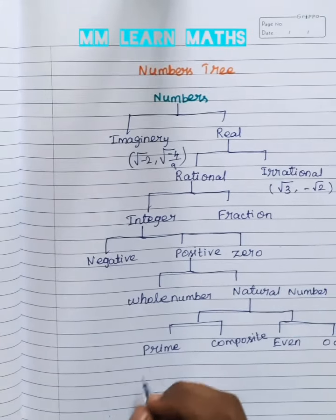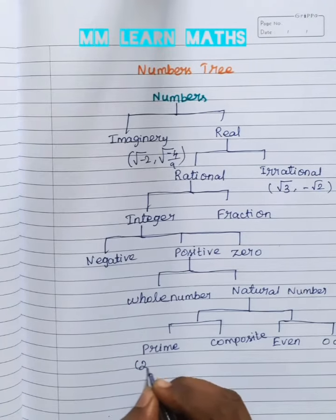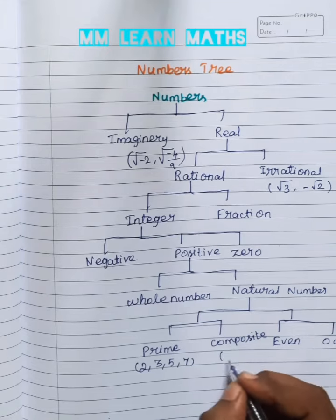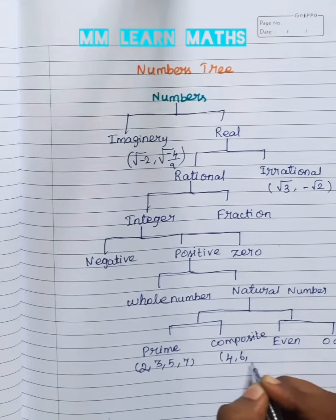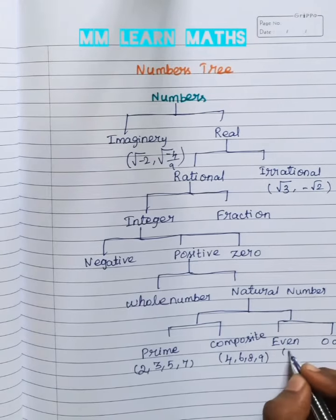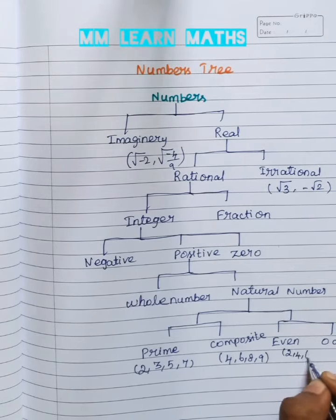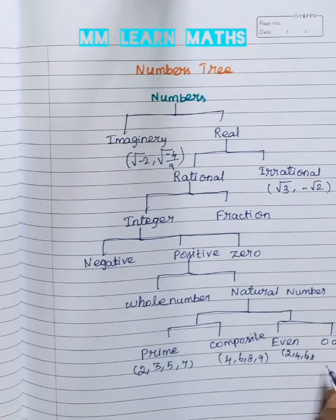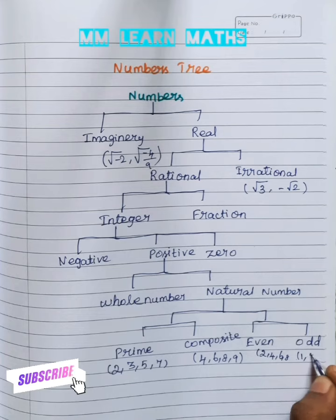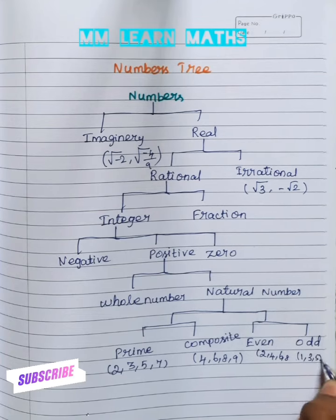And then prime number is two, three, five, seven. Composite number is four, six, eight, nine. Even number is two, four, six, eight. Odd number is one, three, five, seven.